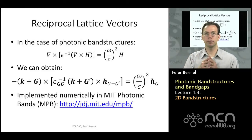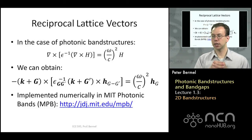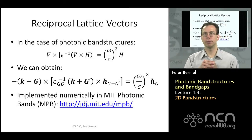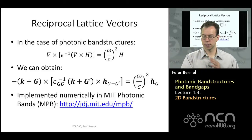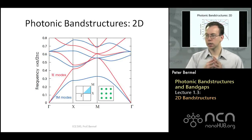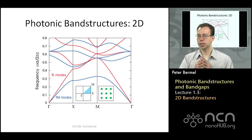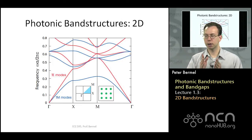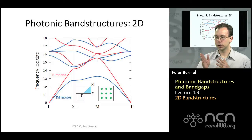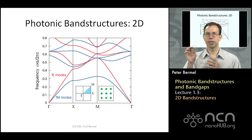These photonic band structures can be solved using MIT Photonic Bands, also known as MPB. You can access it at jdj.mit.edu/mpb, and there is also an implementation available on NanoHub. Using MPB allows us to directly solve the 2D band structure problem — previously we only solved the 1D problem. The specific problem we're solving now is a square lattice of rods in air.